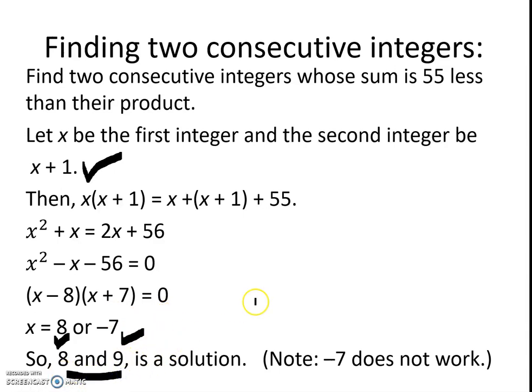8 and 9 times themselves is 72. And 72 minus 17, which is the sum of 8 and 9, is 55. So that works. However, if we try doing the same thing for a negative 7, it does not work. We always need to check our solutions.